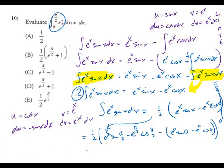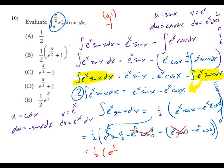Sine of pi over two is one, so that piece is e to the pi over two. Cosine of pi over two is zero, so that term disappears. Sine of zero is zero — gone. Cosine of zero is one, and with a negative times negative, it becomes positive. So the answer is one-half times (e to the pi over two plus 1).